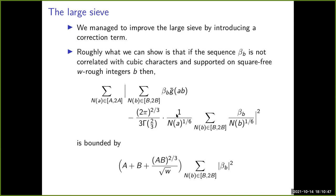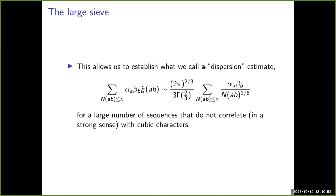Using this corrected large sieve, we establish a dispersion estimate: for sequences α(a)β(b) that don't correlate with cubic characters in a strong sense and where β(b) is supported on square-free integers, we can show an asymptotic of a specific form. One unusual feature of this dispersion estimate is that the main term is of much lower order than in the classical setting.